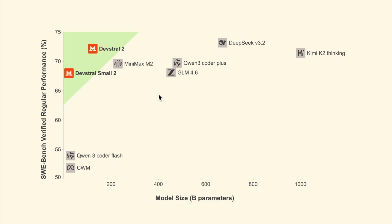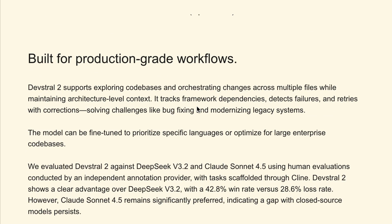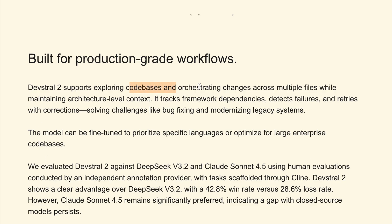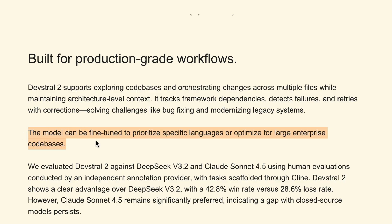DevStral 2 and DevStral Small 2 are 5x and 28x smaller than DeepSeek V3. This smaller footprint enables practical deployment on limited hardware, such as smaller computers, lowering the barrier for developers, businesses, and hobbyists. DevStral 2 is specifically built for production-grade workflows. It is capable of understanding large codebases, coordinating multi-file changes, tracking dependencies, and automatically correcting errors. This makes it highly effective for bug fixes and working with legacy code. It can also be fine-tuned for specific languages and enterprise systems.